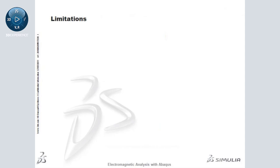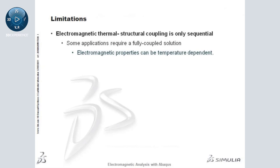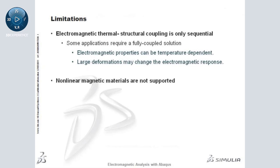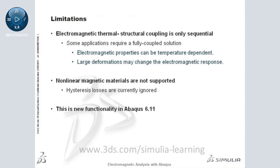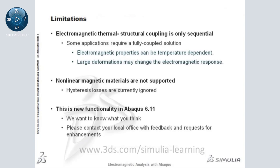To conclude, I would like to make you aware of some limitations in the current low-frequency eddy current analysis capability in Abaqus. First, the electromagnetic-thermal-structural coupling is only sequential. Some applications require a fully coupled solution — for example, cases when electromagnetic properties are temperature-dependent, or situations where large deformations may change the electromagnetic response. Also note that non-linear magnetic materials are not supported, so hysteresis losses are currently ignored. This is new functionality in Abaqus 6.11. We would like to know what you think. Please contact your local office with any feedback or requests for enhancements. Thank you.